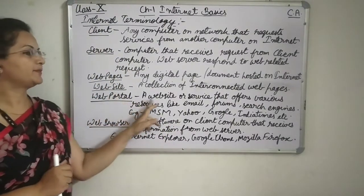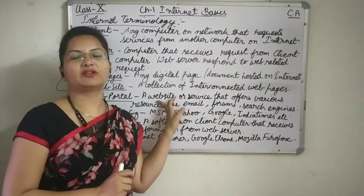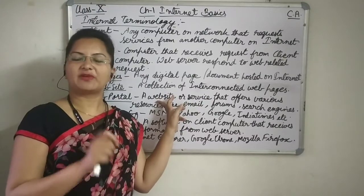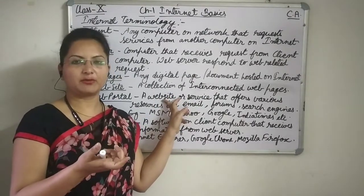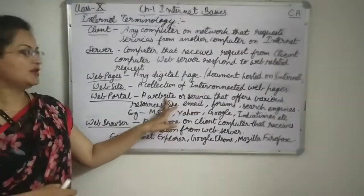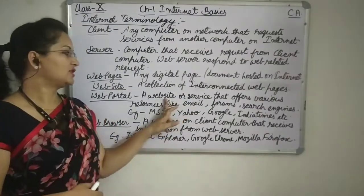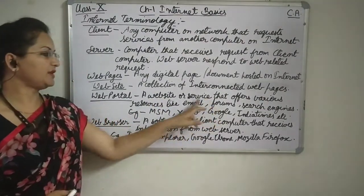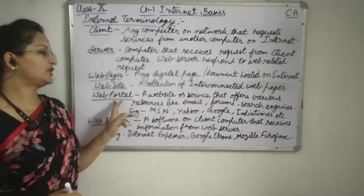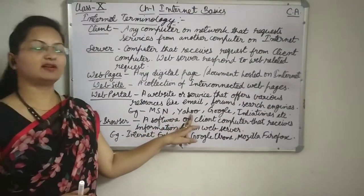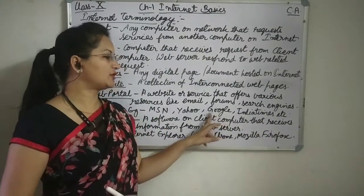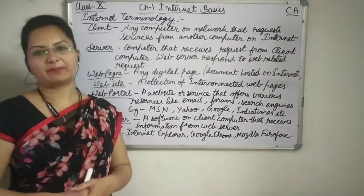Now, web portal. You might have seen Google — when you type google.com in the web browser, you get Google's web portal. On that single page, there are so many links. From those links, you can go to Gmail, Google Photos, Google Images, Google Web, Google News, Google Videos, etc. A web portal will provide you many services. It can be a website or a service that offers many resources like emails, forums, and search engines. There are many web portals similar to Google, like MSN, Yahoo, Bing, and India Times. When you type google.com, yahoo.com, or msn.com, their web portal will appear.